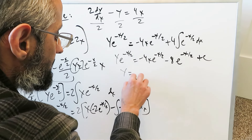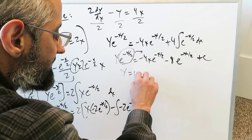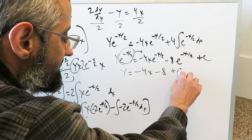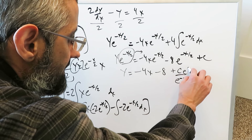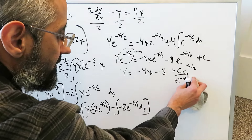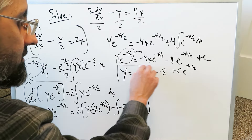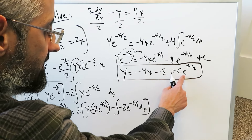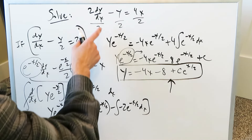Your final answer: y is equal to everything on the right divided by e to the minus x over 2. Dividing through: minus 4x e to the minus x over 2 divided by e to the minus x over 2 gives minus 4x; minus 8 e to the minus x over 2 divided gives minus 8; and c divided by e to the minus x over 2 is written as c e to the positive x over 2. So y equals minus 4x minus 8 plus c e to the x over 2.